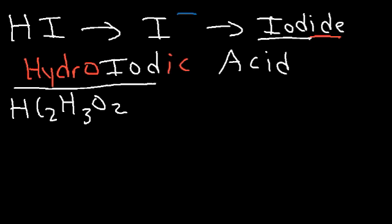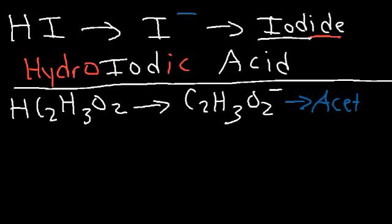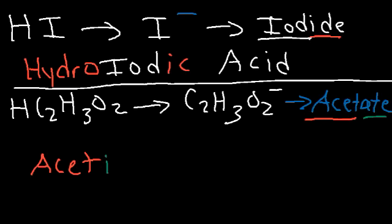What is the name of HC₂H₃O₂? Let's find the polyatomic ion first. C₂H₃O₂⁻ is called acetate. So we're going to keep the part without the '-ate' and replace '-ate' with '-ic'. It's going to be acetic acid.